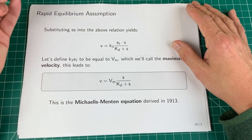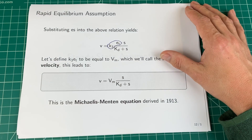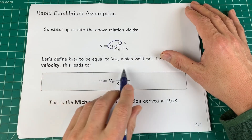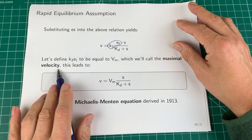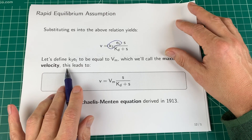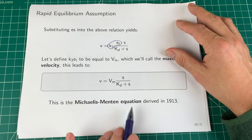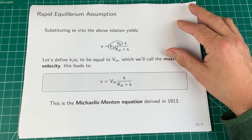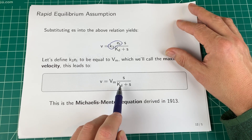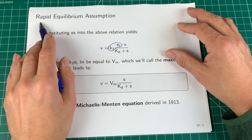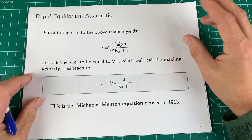I take the pair of terms K3·E_T and replace them with the symbol V_M, which we call the maximal velocity — we'll see why later. This leads to the Michaelis-Menten equation, derived in 1913. Note that KD appears in the denominator — this is the dissociation constant, and it comes from the rapid equilibrium assumption between the enzyme-substrate complex and free enzyme.